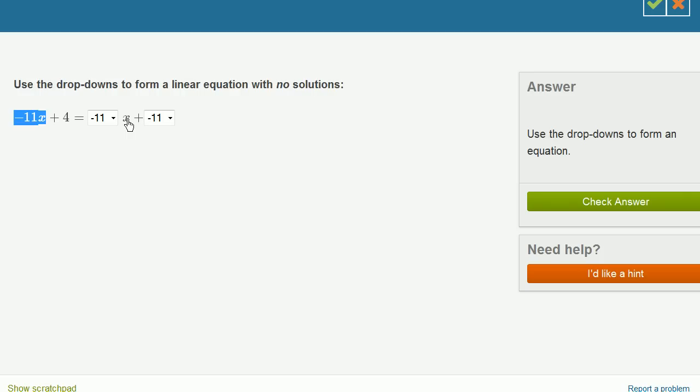If you wanted to solve it algebraically, you could add 11x to both sides, and both of these terms would cancel out with each other. And all you would be left with is 4 equals negative 11, which is not possible for any x that you pick.